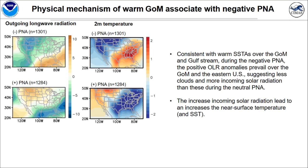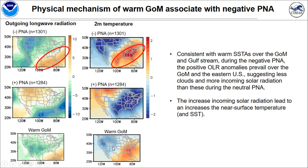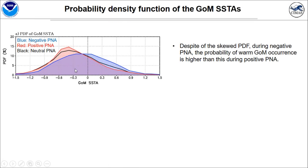We also checked the outgoing longwave radiation and 2-meter temperature during negative and positive PNA. Consistent with warm SST over the Gulf of Mexico and Gulf Stream, during negative PNA, a positive OLR anomaly prevails over the Gulf of Mexico and eastern U.S., suggesting less cloud cover and more incoming solar radiation compared to neutral or positive PNA. Increasing incoming solar radiation also leads to increasing near-surface temperature over the eastern U.S. and Gulf of Mexico SST. The patterns for the warm Gulf of Mexico case are consistent with the negative PNA case.